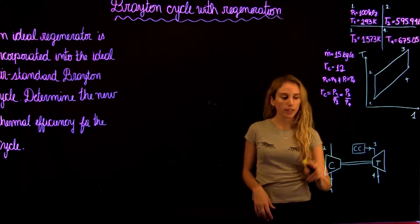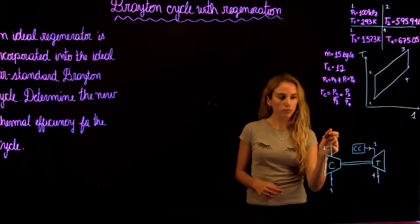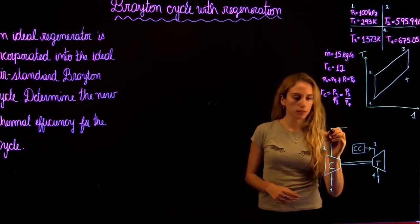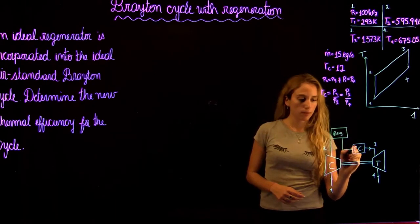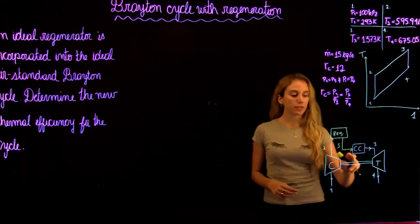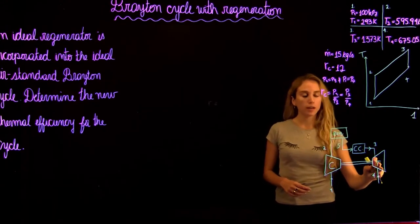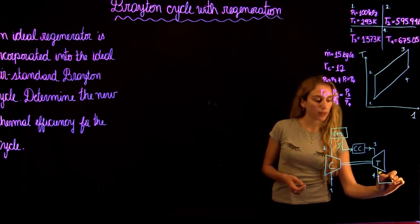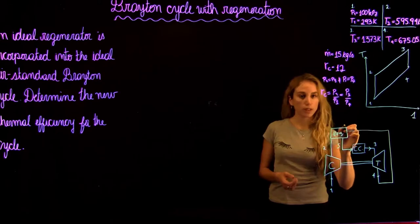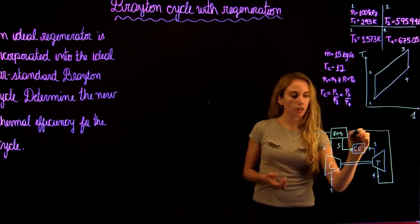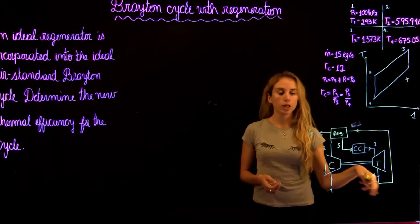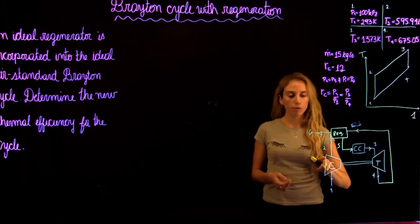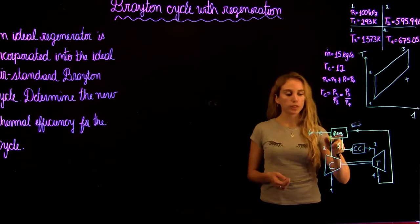In this case, as before, the fluid goes through isentropic compression. Then we go to the regenerator — this is going to be state 5. After isentropic expansion in the turbine, the hot gases have energy that we can use. So we send those hot gases to the heat exchanger or regenerator.